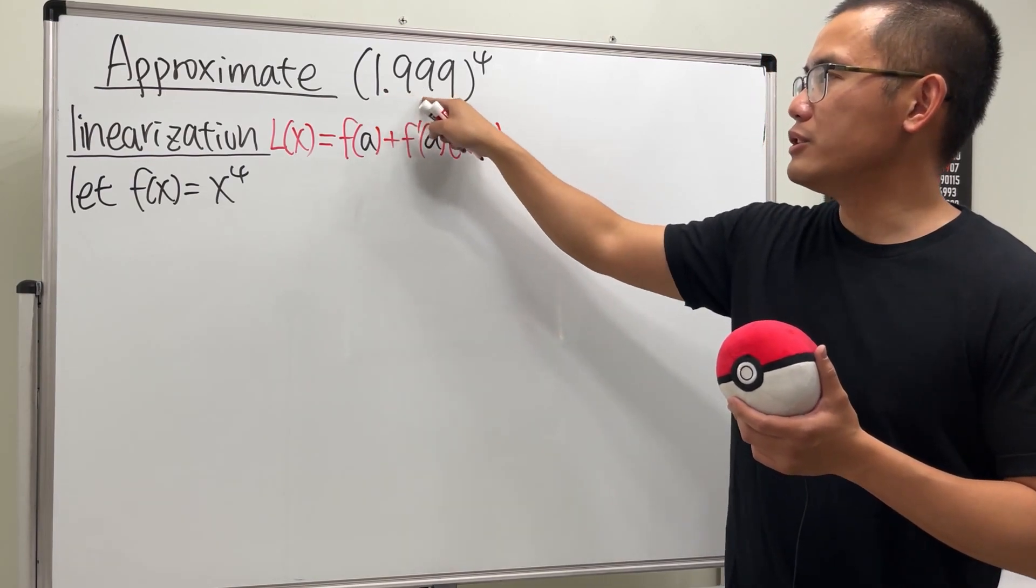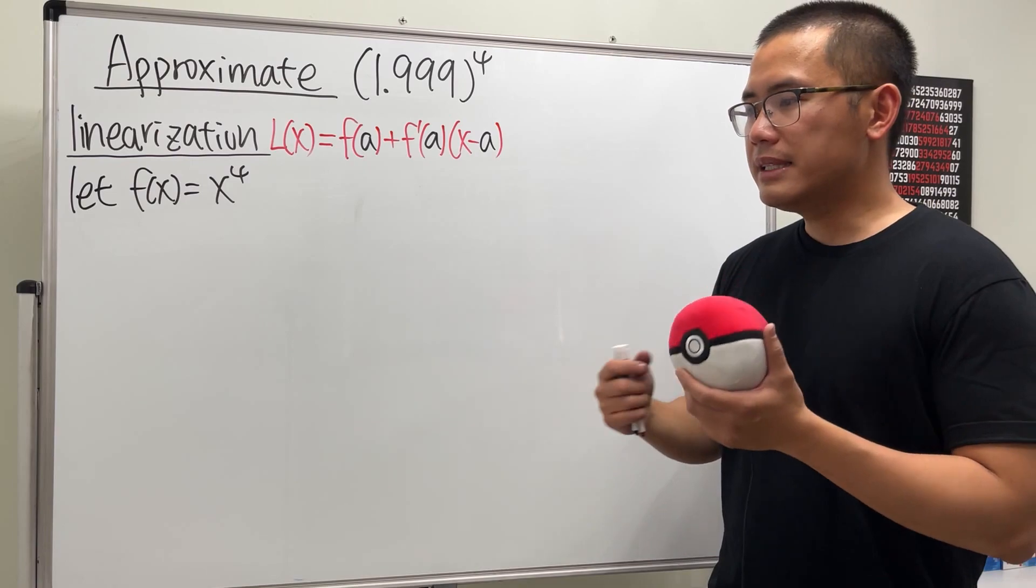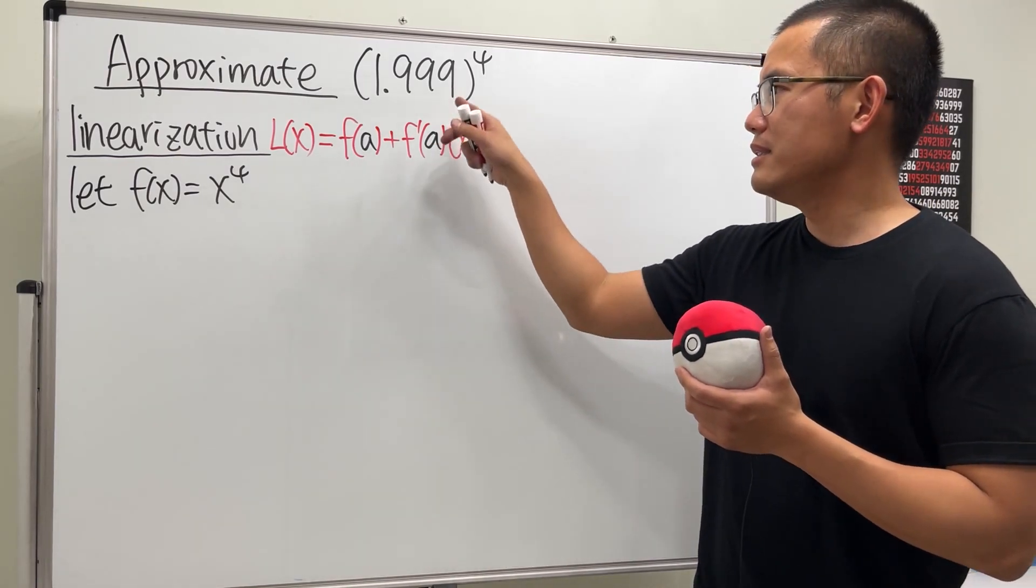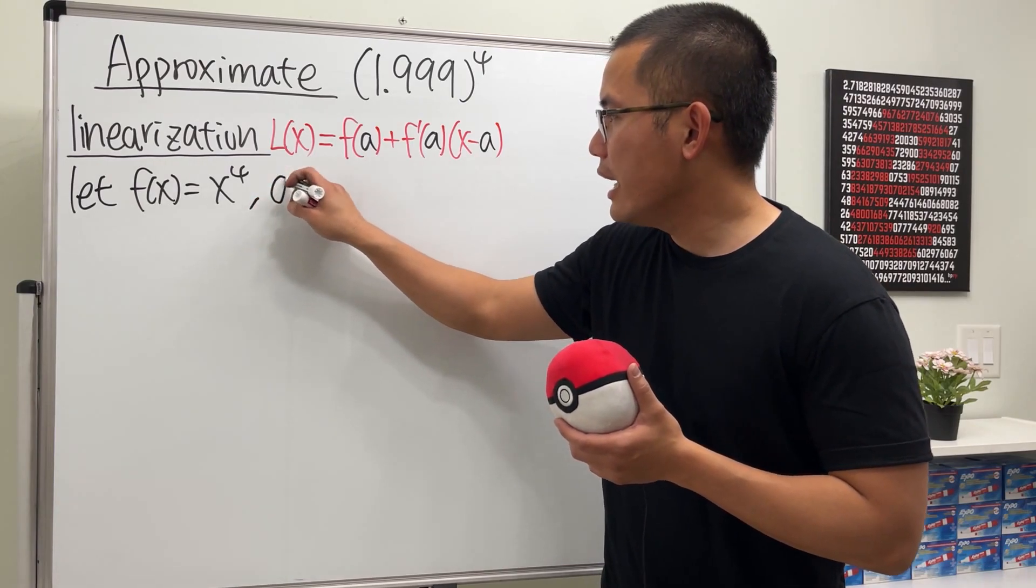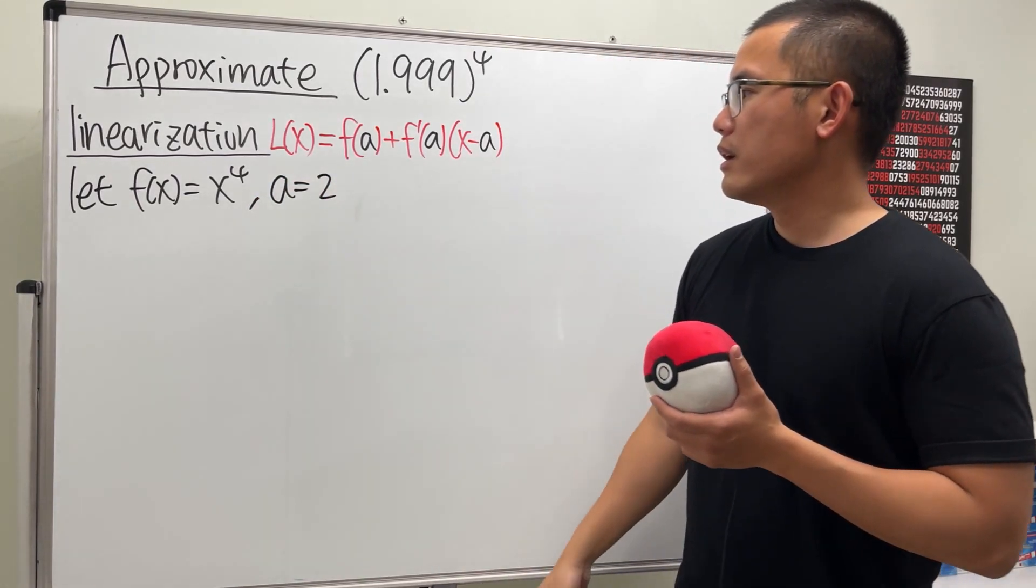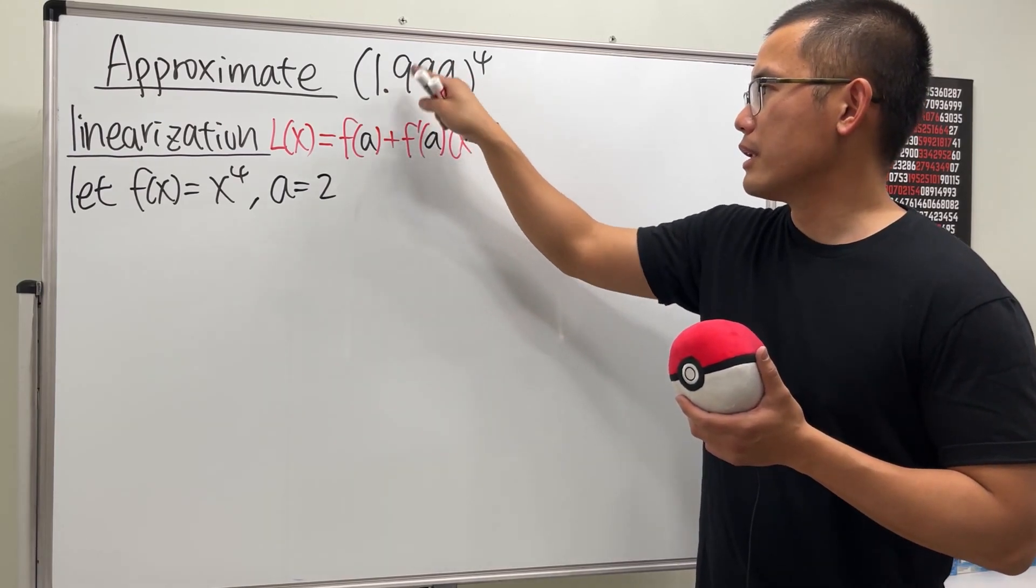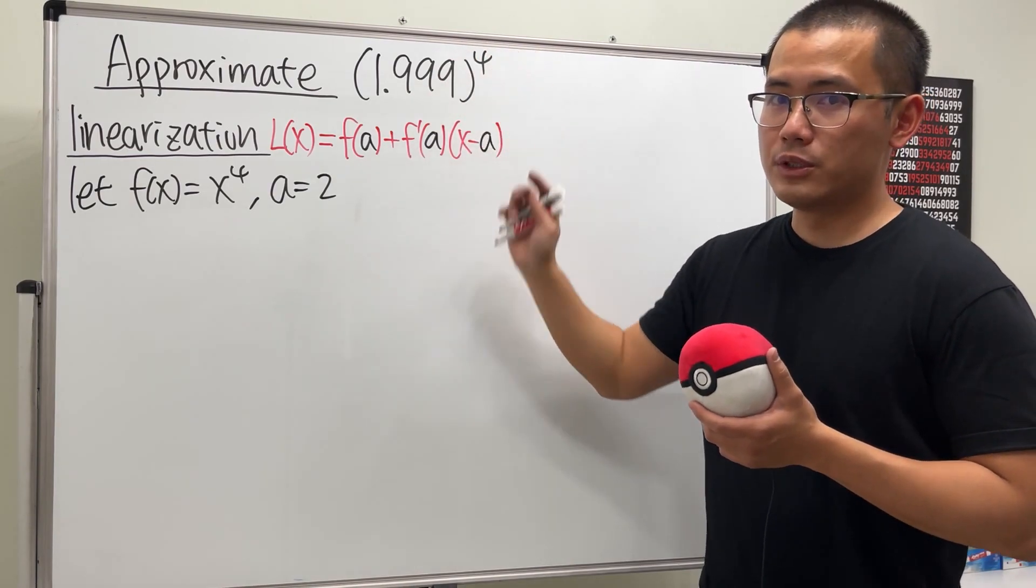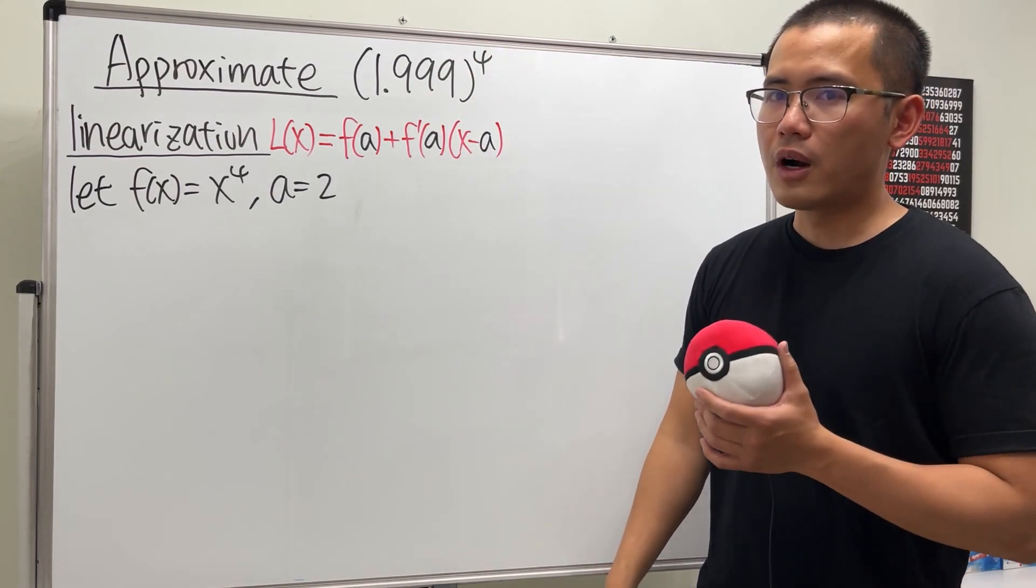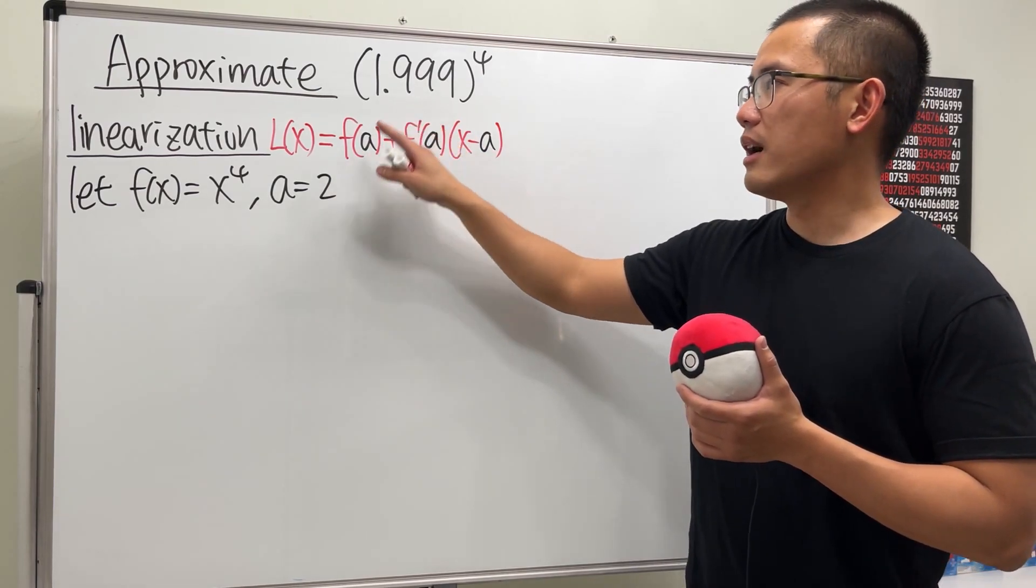You want to find the next easiest number that's easy to compute; that's the a value you want to get. In this case, a = 2. Of course, the a value should be close to the number you're trying to get. Even though we know 1 is easy, 1^4 is really easy, but 1 is too far away from 1.999 compared to 2. This is very close.